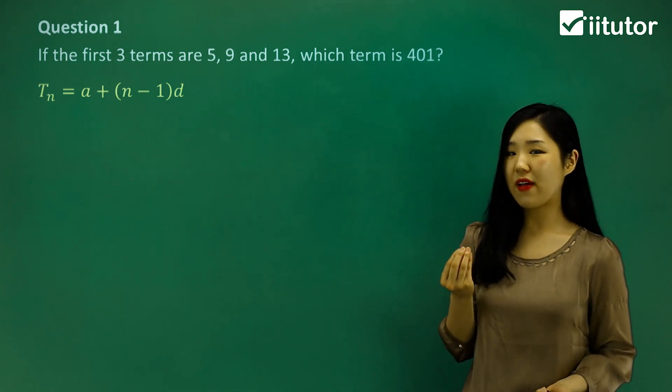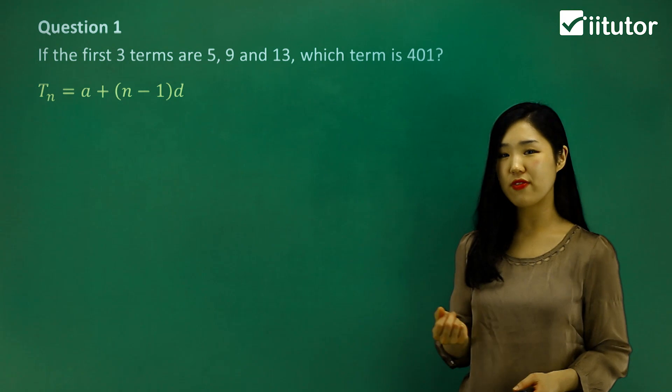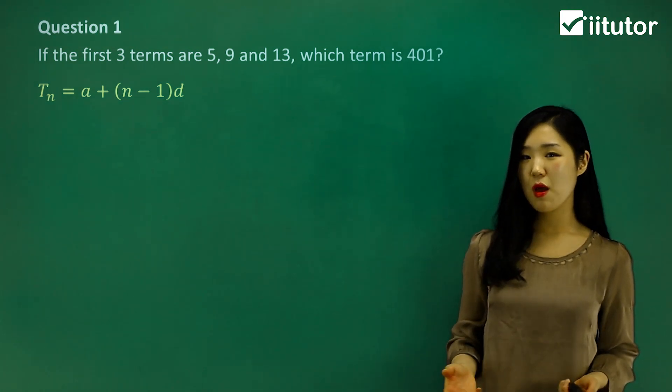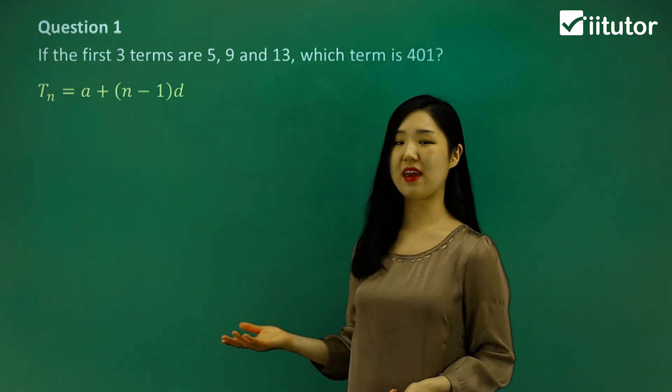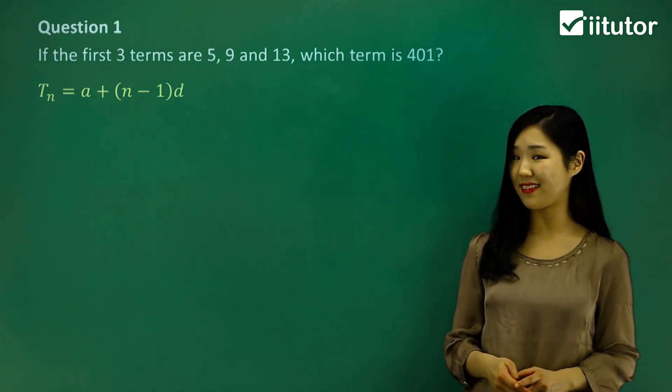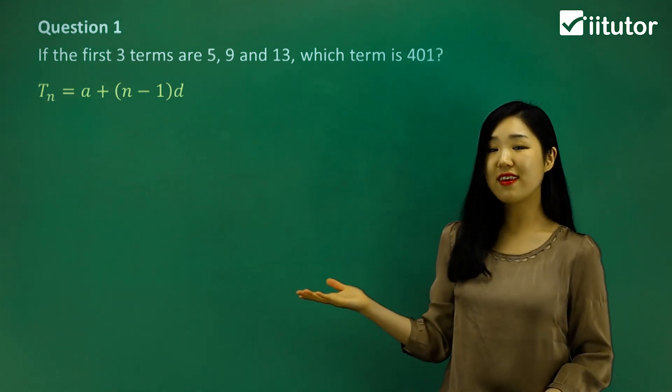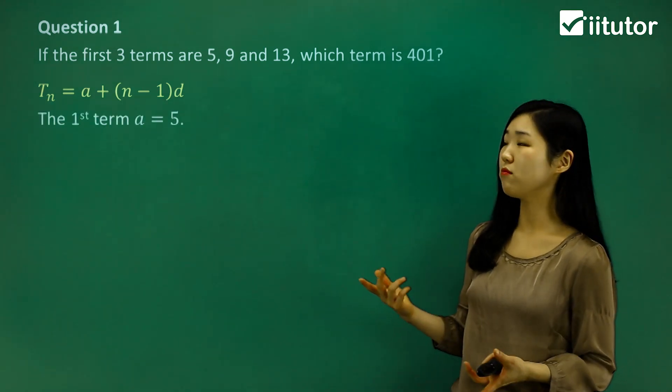Because we want to know which term is 401, which means what value of n makes this value of tn equal to 401. We have to eventually find n, but we can't find n if we don't know what a is and we don't know what d is. So we're going to find the first term and the common difference. If they give us the first three terms, you can see clearly the first term is 5.